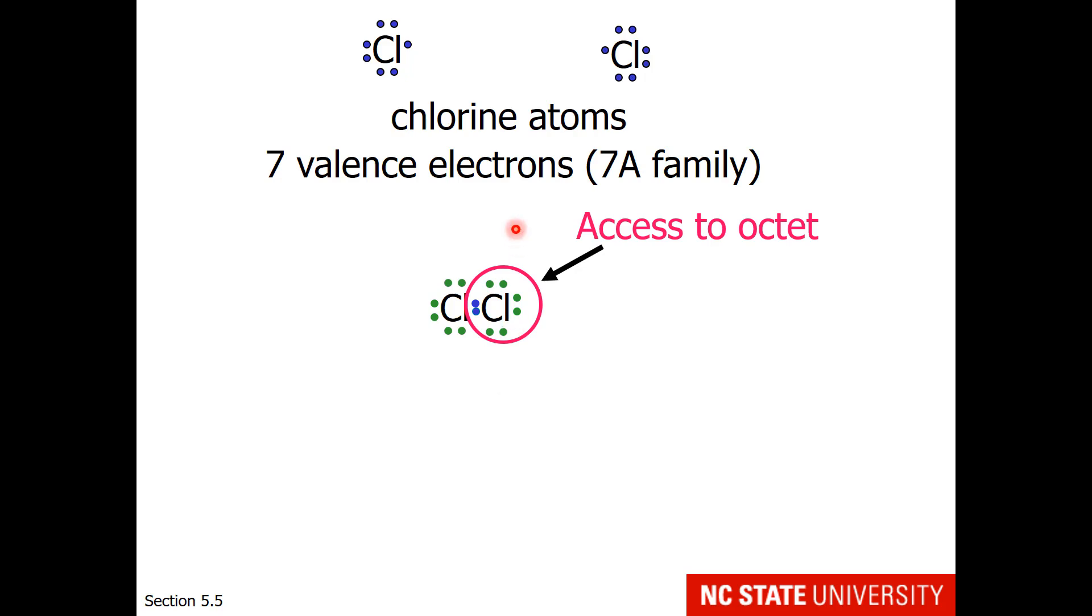Notice that this chlorine feels as if it has access to eight electrons: the seven electrons it came in with plus the one it is sharing. The other chlorine also feels as if it has access to eight electrons, the seven that it came in with and the one it is sharing. So shared electrons are essentially double-counted as belonging to either atom on the side of the bond.